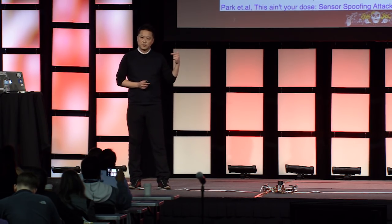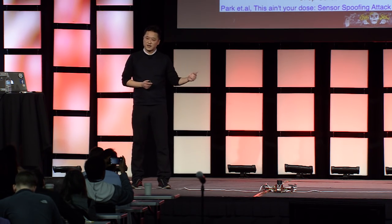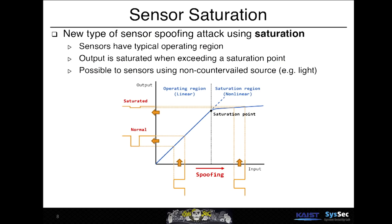How can an attacker make the receiver believe there is no drop? One thing that makes this attack difficult is that light cannot be canceled. The attack can be done using sensor saturation. Usually, sensors have an operating region where output changes linearly with input. However, if the receiver is saturated — receiving more physical quantities than it can handle — it behaves in a non-linear fashion.